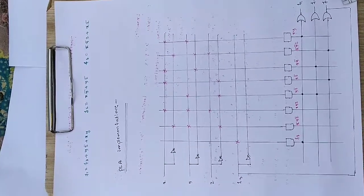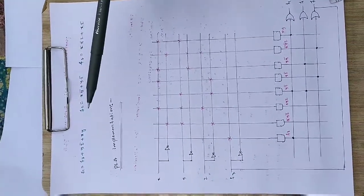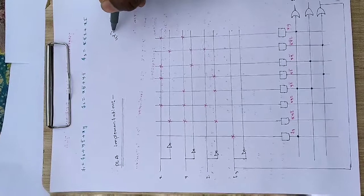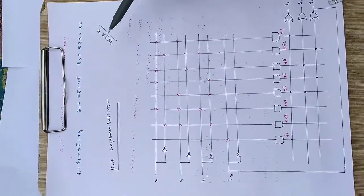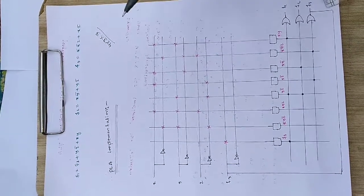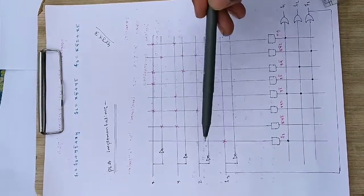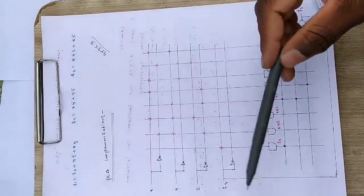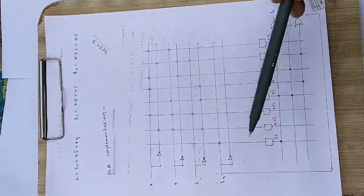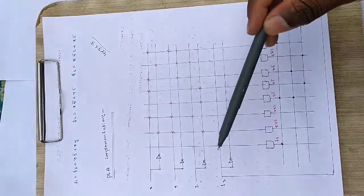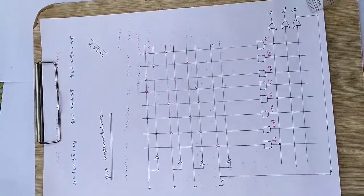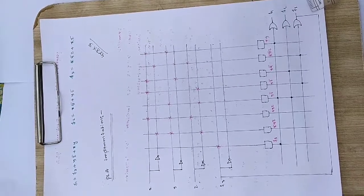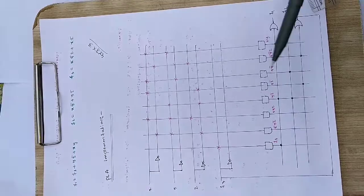Now it's time to implement the PLA design. We have the equations: F1 = F3 + YZ̄ + XY; F2 = XȲ + YZ̄; F3 = X̄ȲZ + XZ̄. This is a 4×8×3 design — 4 inputs, 8 AND gates (product terms), and 3 outputs. We take 4 inputs: X, Y, Z, and their complements via NOT gates, plus F3 fed back as the fourth input. We draw 8 AND gates.